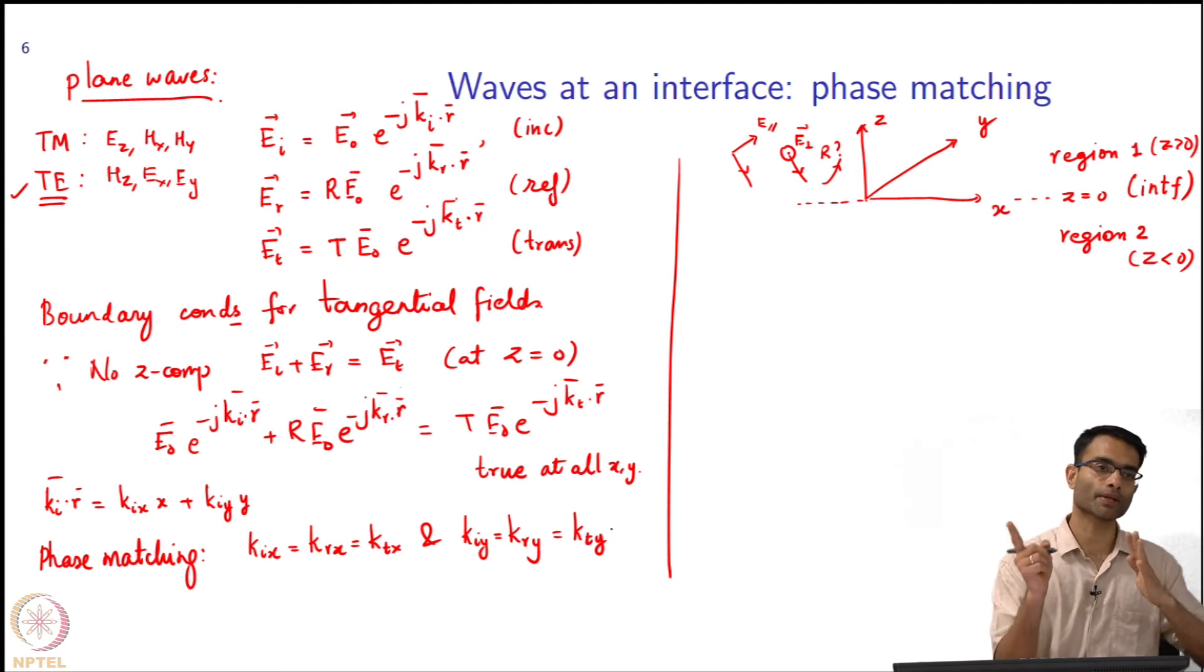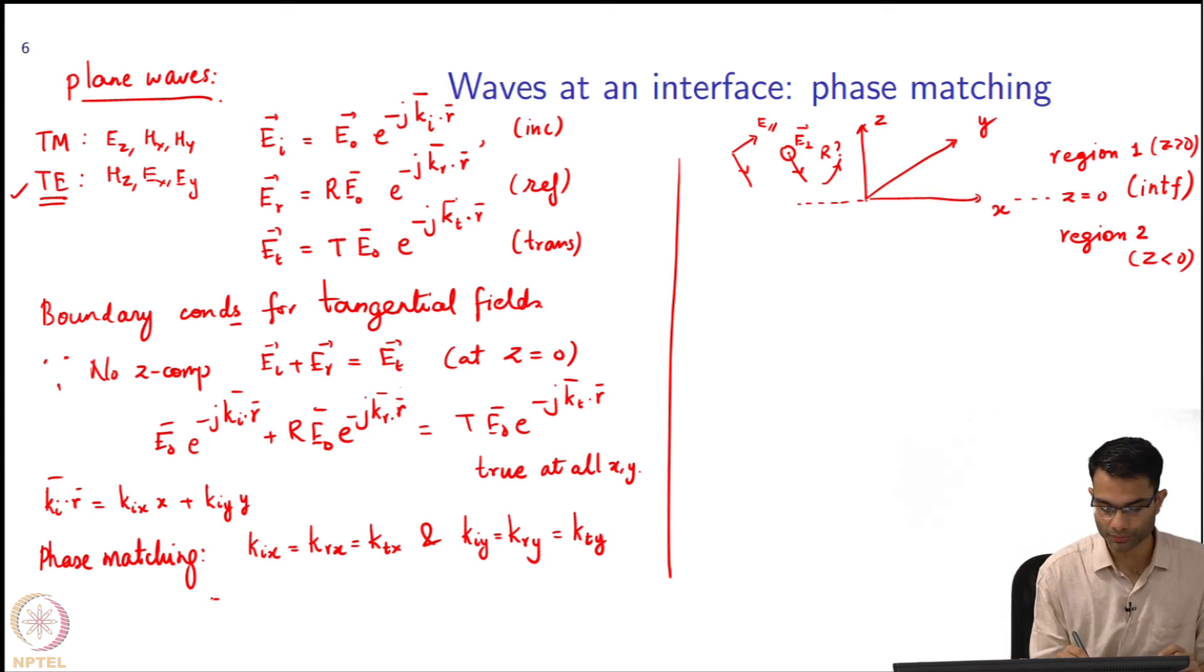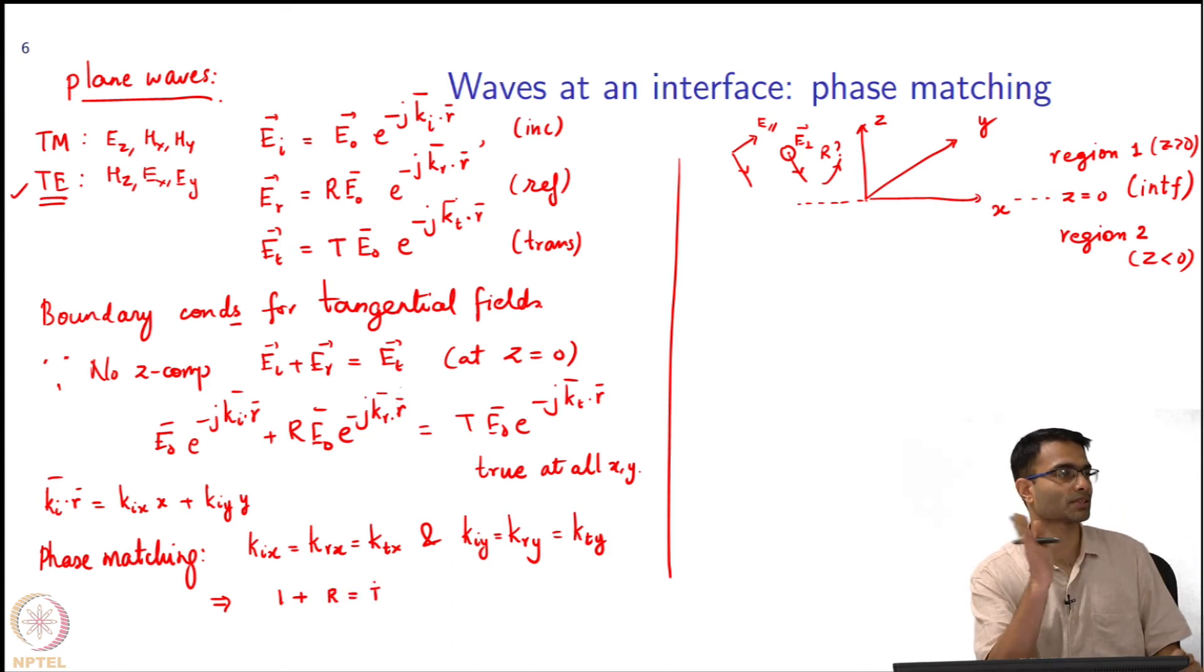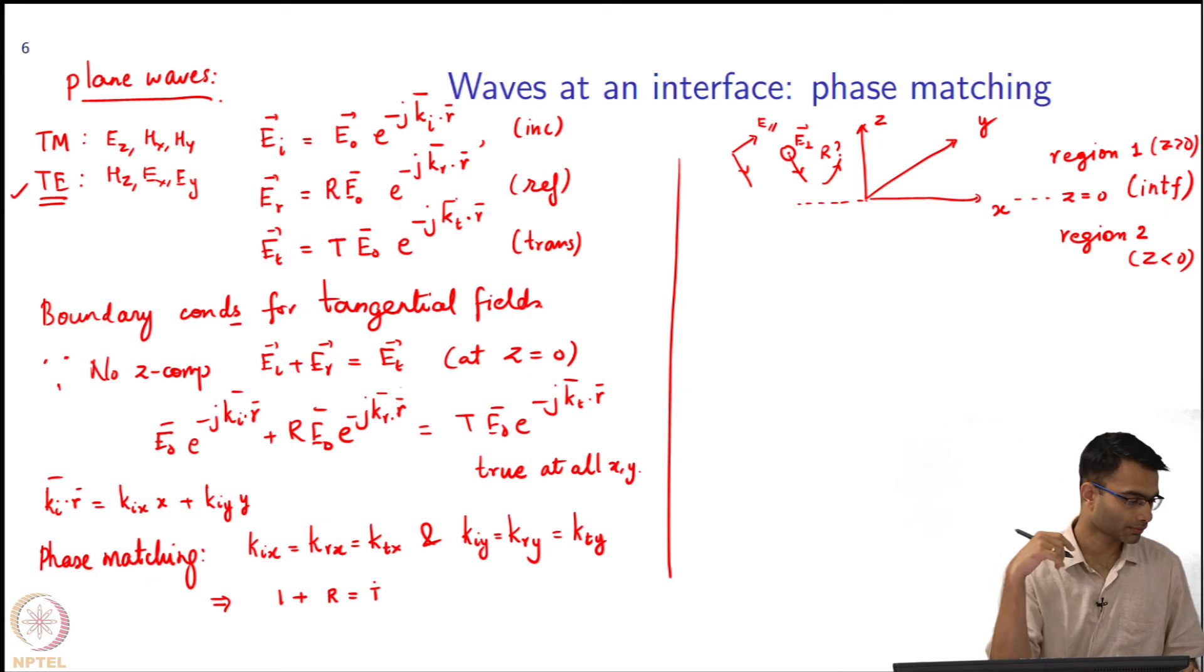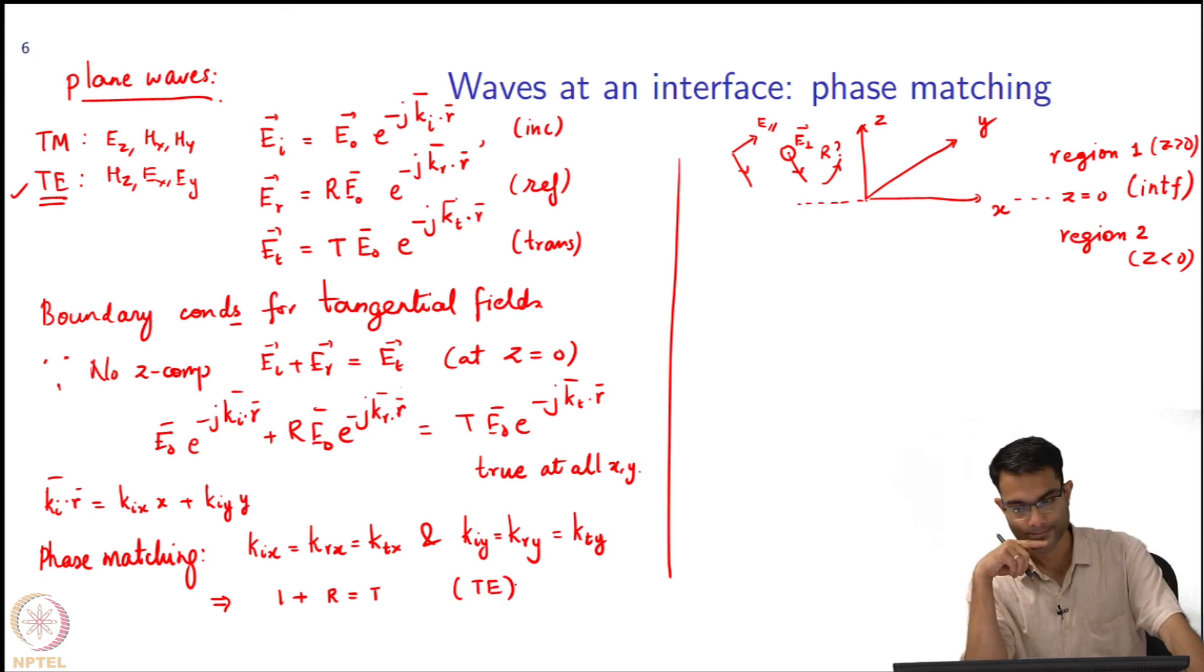That is what is called in optics the phase matching condition. This is actually the rigorous way of deriving your Snell's laws. Phase matching - it is called more like a common sense thing. kix should equal krx should equal ktx, and kiy should equal kry should equal kty. If I ensure this, then no matter what x and y are plugged in, the phasors will rotate at the same speed. Once this is done, the phasors are equal and can get cancelled off. This is TE polarization.